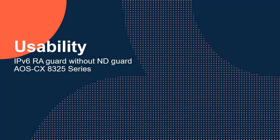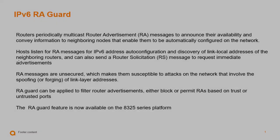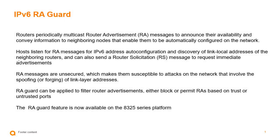The next usability feature is IPv6 RA guard without the ND guard feature, and it specifically applies to the 8325 series. Prior to 10.09, the 8325 series did not have any RA guard capability — now it does. This is an additional command for the 8325 series only, effectively supporting RA drop on untrusted ports. It does not have extended commands relating to neighbor discovery inspection or the ability to support an ACL for an RA guard policy, unlike other CX platforms.